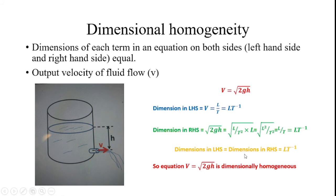Both are equal. So the equation V equals the square root of 2GH is dimensionally homogeneous. When developing a mathematical model with dimensional analysis, you should ensure the dimensional homogeneity of the developed equation.